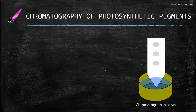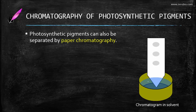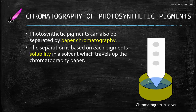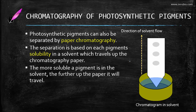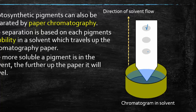Let's specifically talk about chromatography of the photosynthetic pigments. I've got an illustration here of a chromatogram — a piece of chromatography paper cut into a V, dipped into the solvent. The photosynthetic pigments can be separated by paper chromatography, and the separation is based on each pigment's solubility in the solvent, which will travel up the chromatography paper. The solvent moves up and carries with it various pigments, which go to different heights. The more soluble the pigment is in the solvent, the further up the paper it will travel. This pigment spot here is the most soluble and traveled the furthest; this one is the least soluble and traveled the least distance.